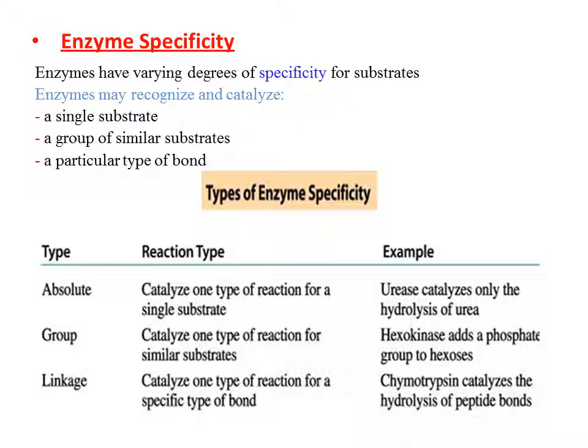Types of enzyme specificity: Absolute specificity — catalyzes one type of reaction for a single substrate only, with no other reactions; example is urease, which catalyzes only the hydrolysis of urea. Group specificity — catalyzes one type of reaction for similar substrates; example is hexokinase, which adds a phosphate group to any hexose sugar. Linkage specificity — catalyzes one type of reaction for a specific type of bond; example is chymotrypsin, a digestive enzyme that hydrolyzes peptide bonds wherever they are found, whether in a protein, drug, or food.